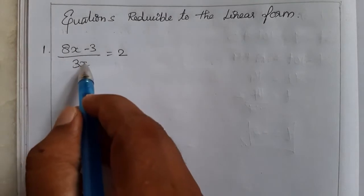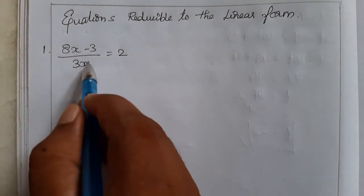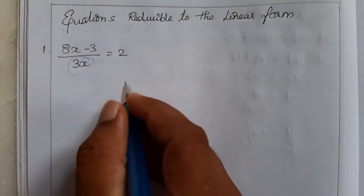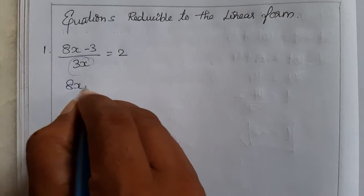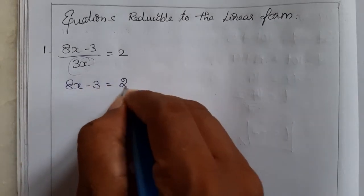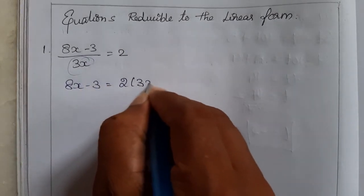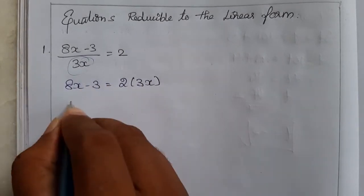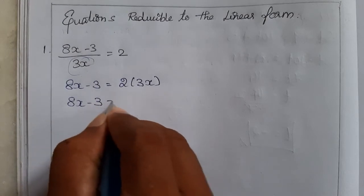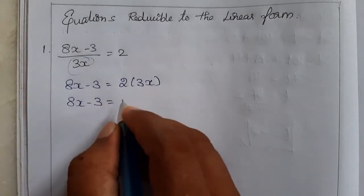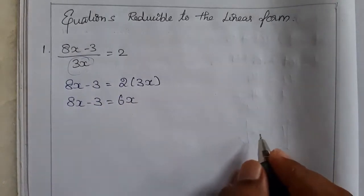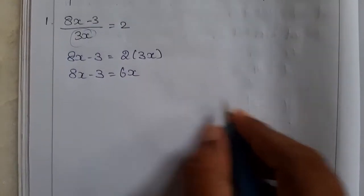Here the denominator is 3x. If you bring it to the other side, it will become a multiplication. So, 8x minus 3 is equal to 2 into 3x. That gives us 8x minus 3 is equal to 6x. Now it is in linear form.